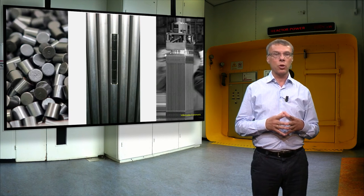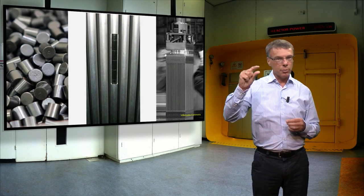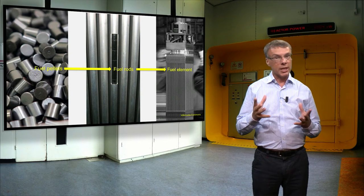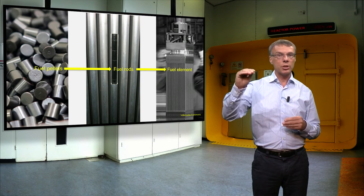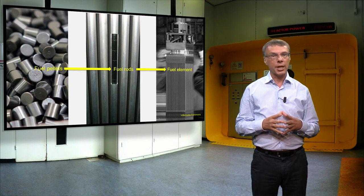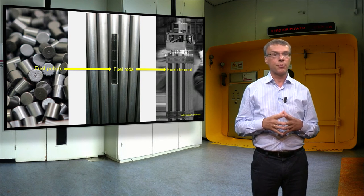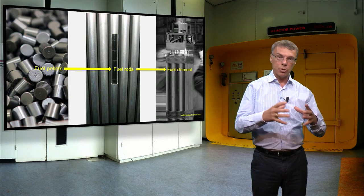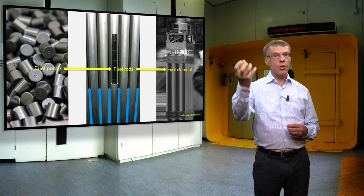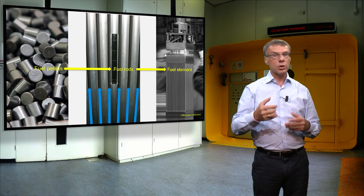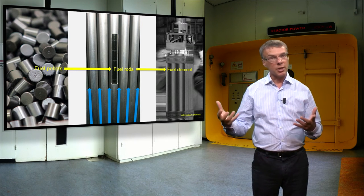Here you see how the fuel looks like. Small fuel pellets with a height of about 10 mm and diameter of 8 mm are stacked upon each other in a gas-tight fuel cladding. The fuel rods are assembled together into fuel elements. Water flows through the space between the fuel rods to moderate the neutrons and to take away the heat.